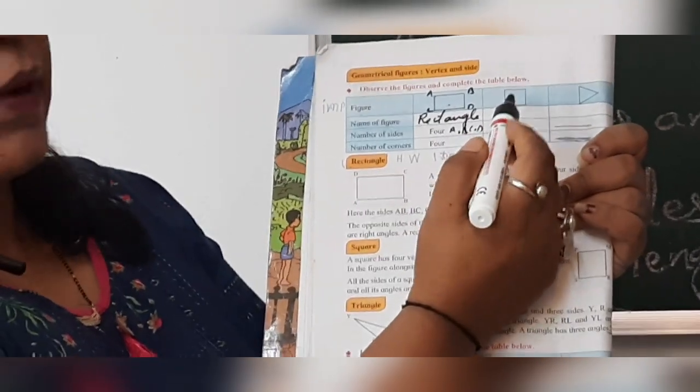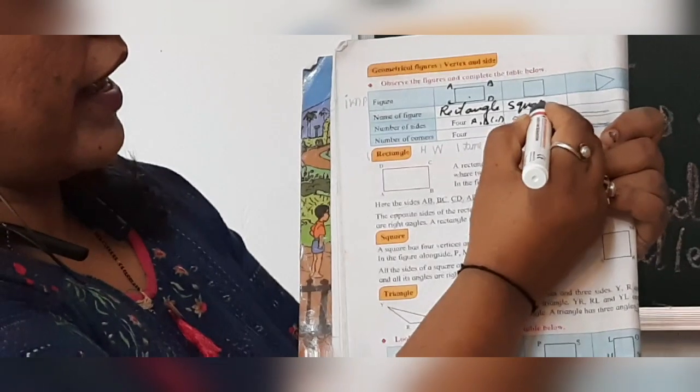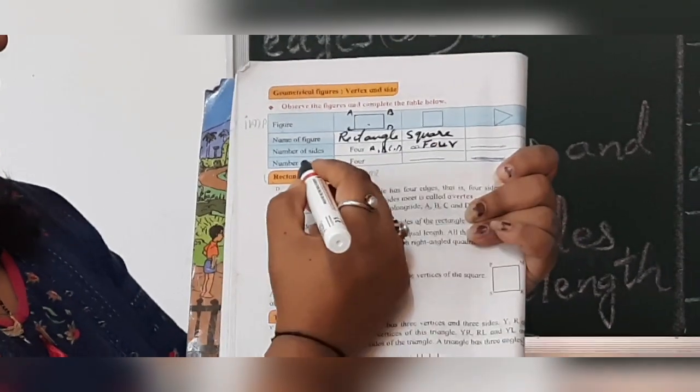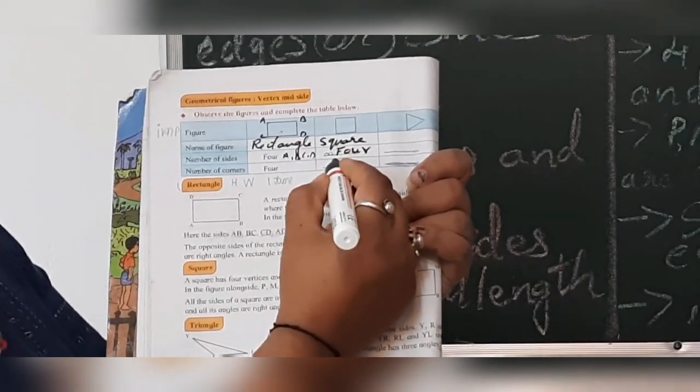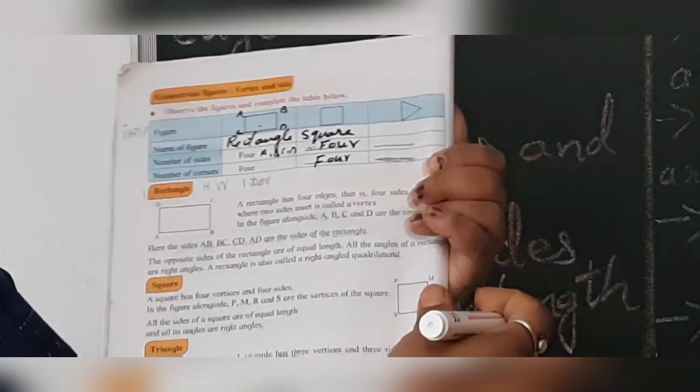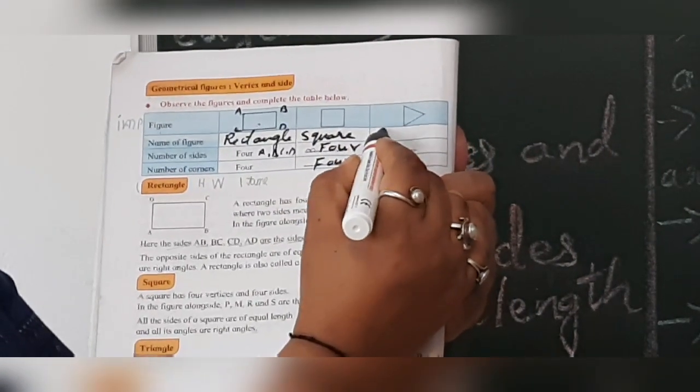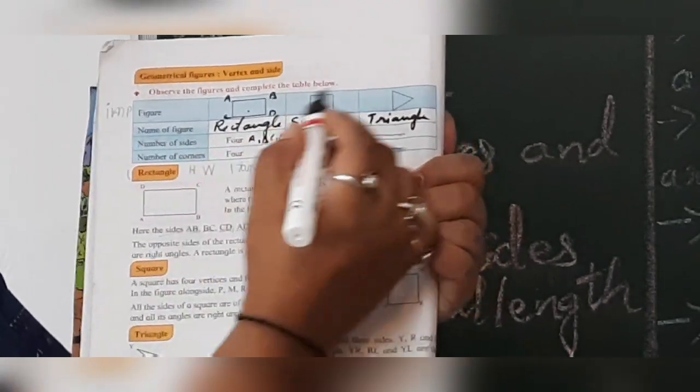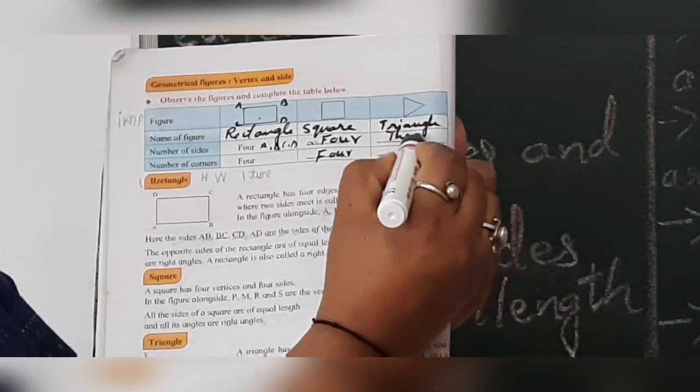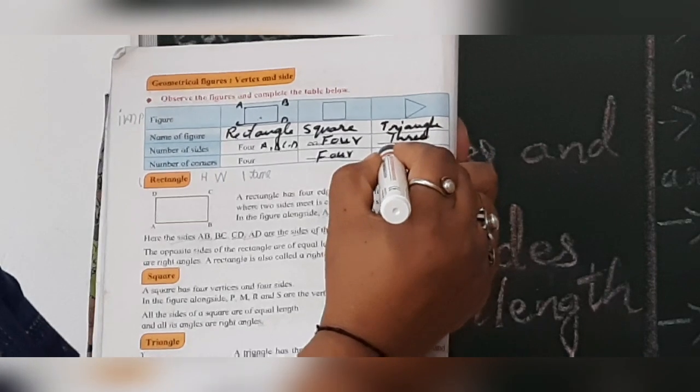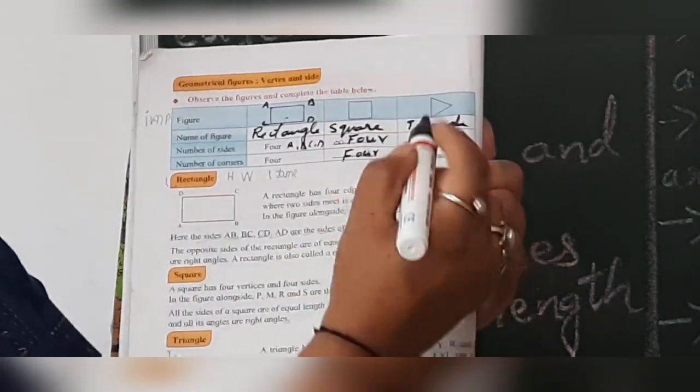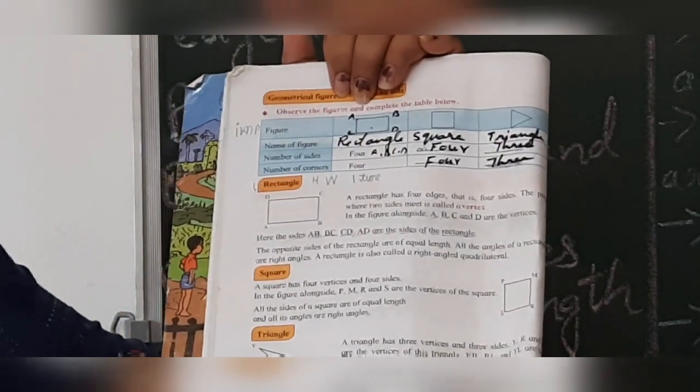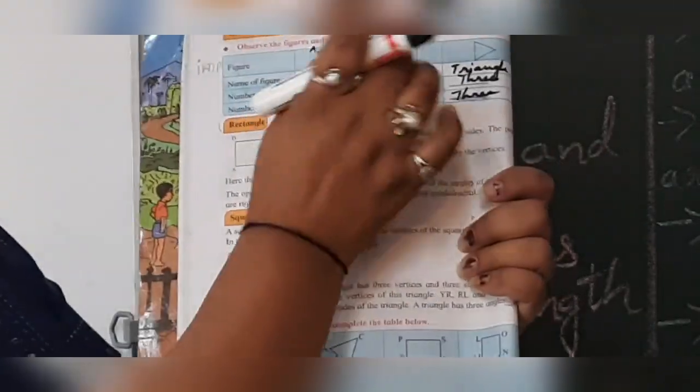Then here, what is the shape? It is a square. S, Q, U, A, R is square. So name of the sides. How many sides it has? It has four sides. Name of the corners. How many corners? Four corners. Now, here. Now, this. What is this figure? It is a triangle. What it is? Triangle. How many sides it has? It has three sides. How many sides? Three. How many corners? When three sides are there, naturally the corners will also be three. This is the observation. The figure and complete the table. We finish.